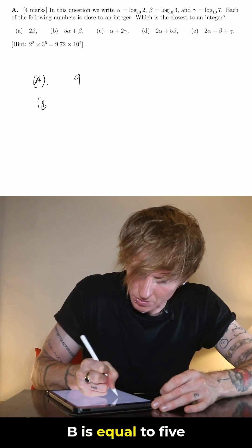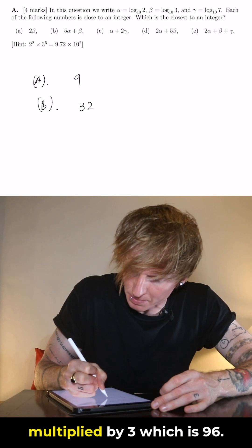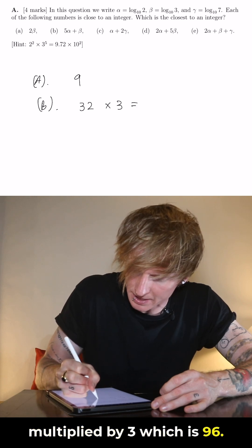B is equal to 5 alpha plus beta so that's 2 to the 5, 32, multiplied by 3 which is 96.